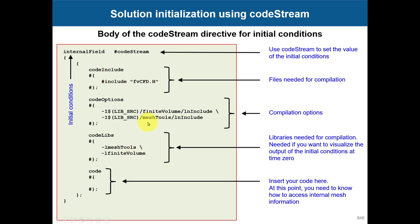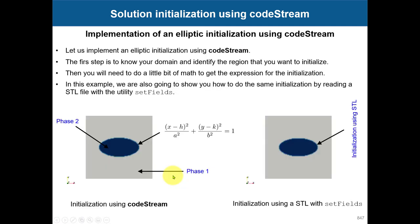These are the standard libraries that are going to give you access to everything you need for implementing initial conditions and boundary conditions. You have this template — remember you apply it in codeStream, and instead of putting a scalar or vector value, you put this entry and then program your initial condition here, just as we did for boundary conditions.